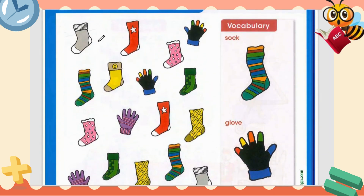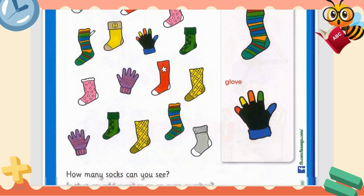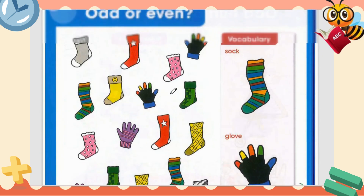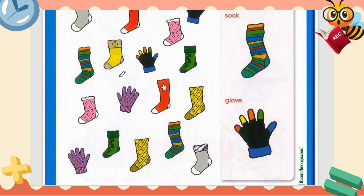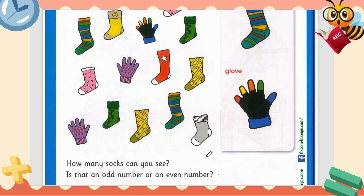You have to tell if these socks have a pair or not. Yes — they have pairs, so it's even. These socks — even. These socks — even. This class — even. This one — even. This one — odd. This one — even. This one — even. This one — even. This one — even. This one — even. This one — even. So they have pairs, so they are even.